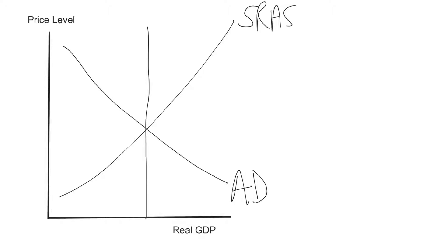That will be our long-run equilibrium. This is where the economy is at potential GDP. We don't have any cyclical unemployment. All our resources are being used to their capacity. This is the level of output we should be producing, and we're at the right price level. What we want to do in this video is the static aggregate demand–aggregate supply model. The point of this model is so we can focus on how the economy adjusts to recessions and expansions and always comes back to this spot.